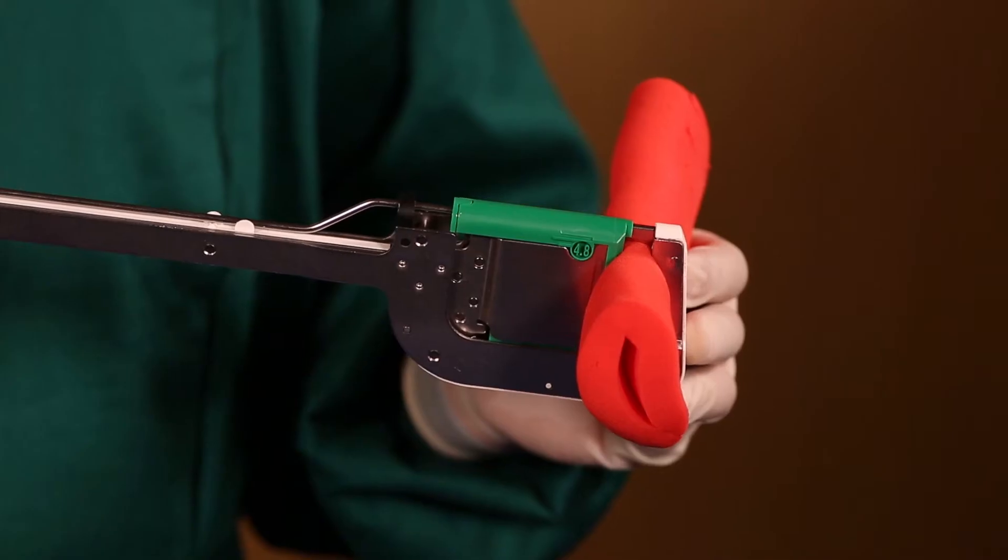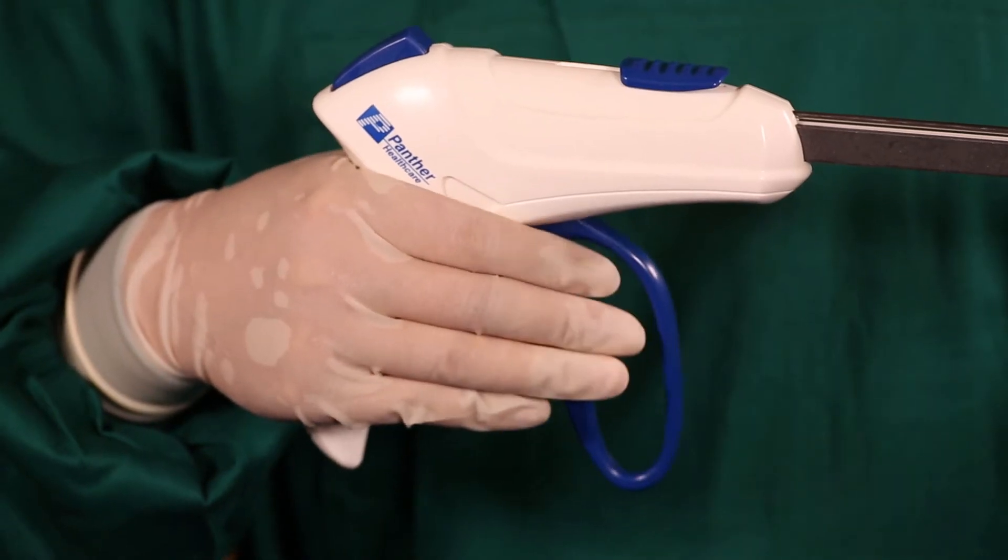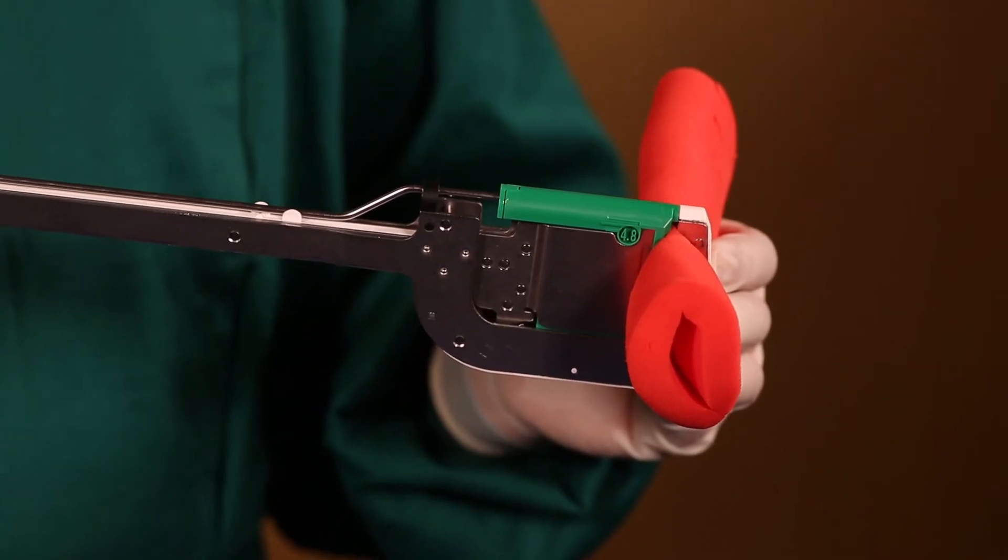Squeeze the firing handle fully and release it to make sure it moves back to the original position. In this position, the jaws are fully closed.